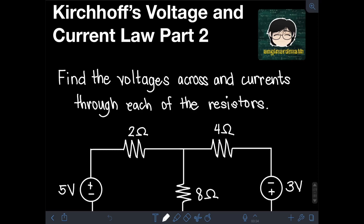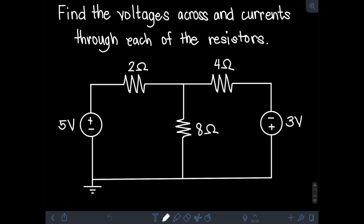To illustrate how to use KCL and KVL to solve a circuit, we have this example. Find the voltages across and currents through each of the resistors for this given circuit. We have 3 resistors: R1 equal to 2 ohms, R2 equal to 8 ohms, and R3 equal to 4 ohms. We also have 2 independent voltage sources: the 5V DC source and the 3V DC source. We are required to find the voltages across each of the resistors R1 to R3 as well as the currents flowing through them.